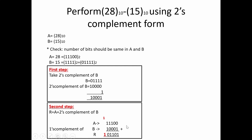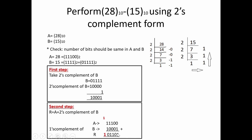In 1's complement we used to add the carry, but in 2's complement we ignore it. So the result after ignoring the carry is 01101, which equals 13. Converting 13 to binary gives 1101, confirming the answer is correct.